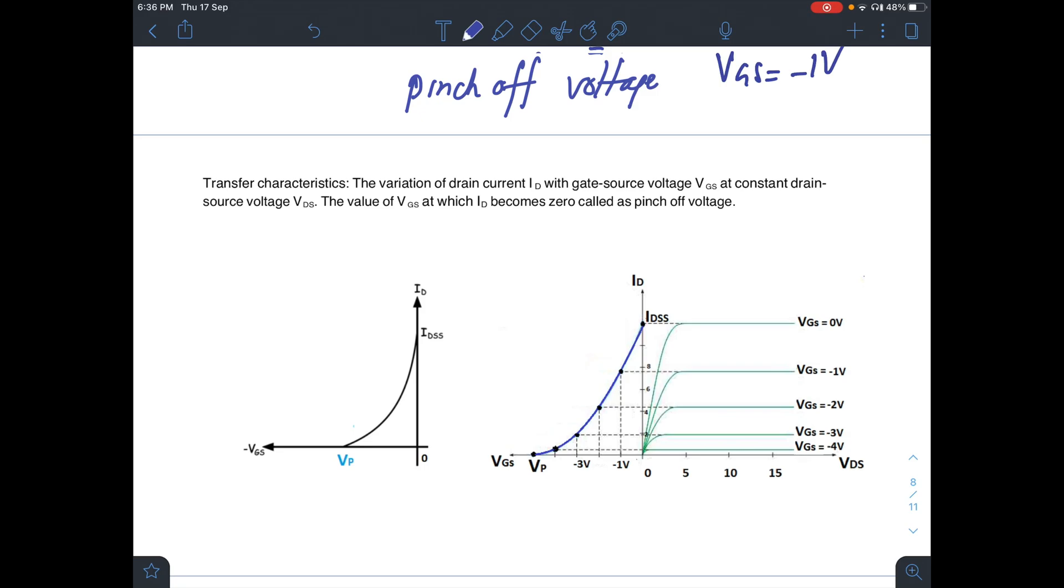For transfer characteristic, the curve you have to draw is between ID and VGS. You can actually simultaneously draw this curve. For transfer characteristic, you will fix VDS and you will change VGS and note the value of ID.